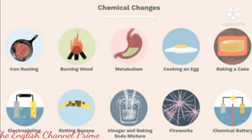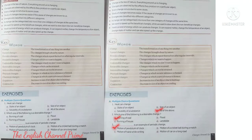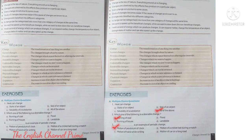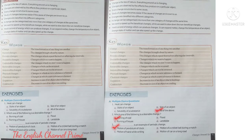Open page number 91. Let's start with multiple choice question A. Question one: Heat can change — is it the state of an object, size of an object, solubility, or all of the above? Yes children, it is all of the above.